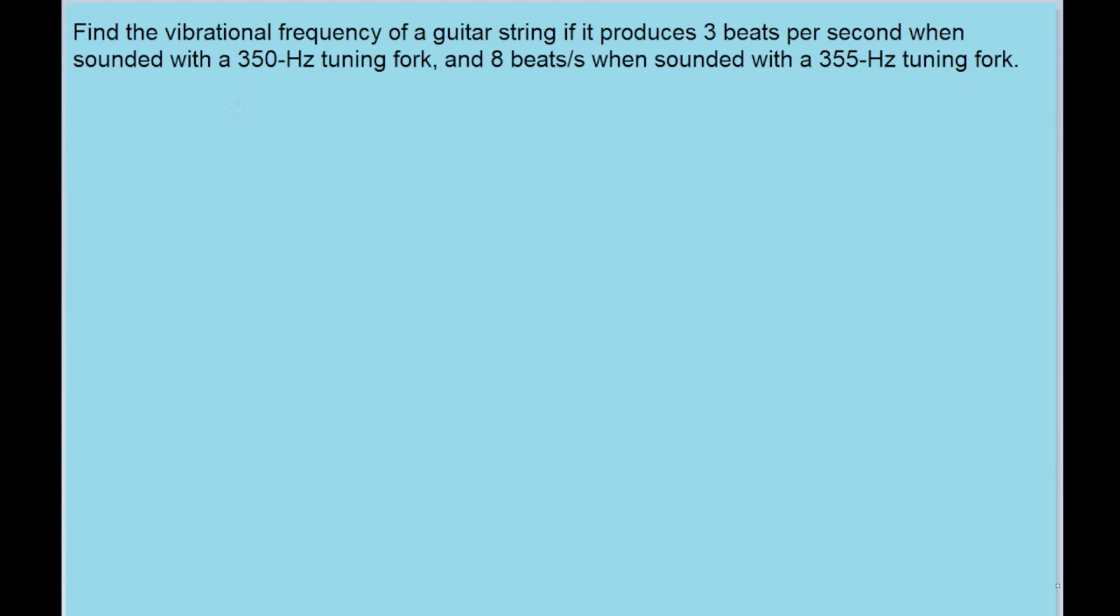In this problem, we have a guitar string that when sounded with a tuning fork at 350 hertz produces 3 beats per second, and when you sound it with 355 hertz, it produces 8 beats per second. So we want to find the frequency of that guitar string.